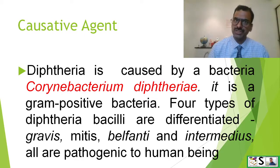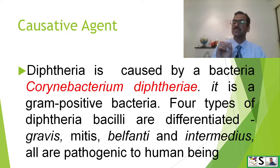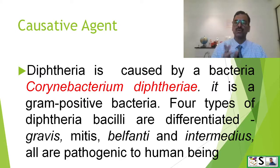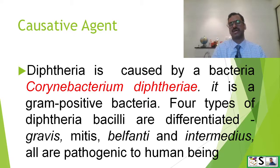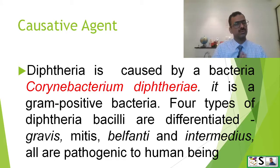What is the causative agent of diphtheria? Diphtheria is a bacterial disease and the bacteria which causes diphtheria is Corynebacterium diphtheriae. It is a gram positive bacteria and four types of diphtheria bacillus or strains are differentiated: Gravis, Mitis, Belfanti, and Intermedius. All are pathogenic to human beings.